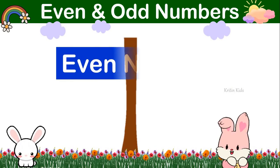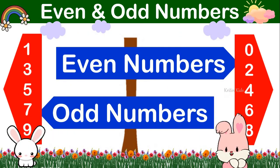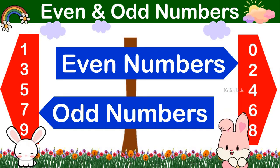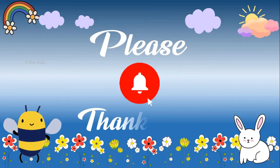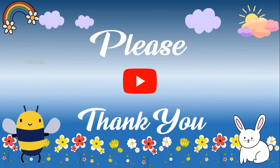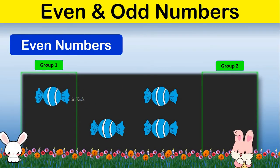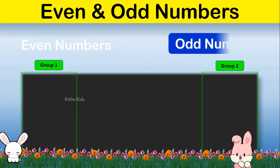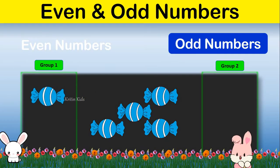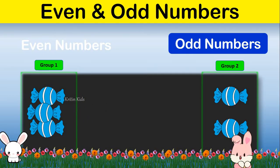Hello friends, let's learn what are even numbers and odd numbers. Even numbers are the numbers where if you divide them between two groups, each group will have equal number of items. Whereas odd numbers are the numbers where if you divide them between two groups, both the groups will not have the same number of items.